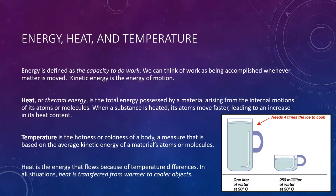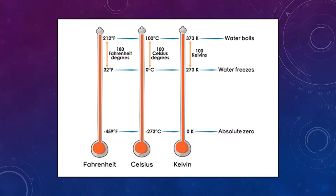There are three main temperature scales. Degrees Fahrenheit, developed in the early 1700s by G. Daniel Fahrenheit, are used to record surface temperatures by meteorologists in the United States. However, since most of the rest of the world uses degrees Celsius, which was developed later in the 18th century, it is important to be able to convert from one to the other.